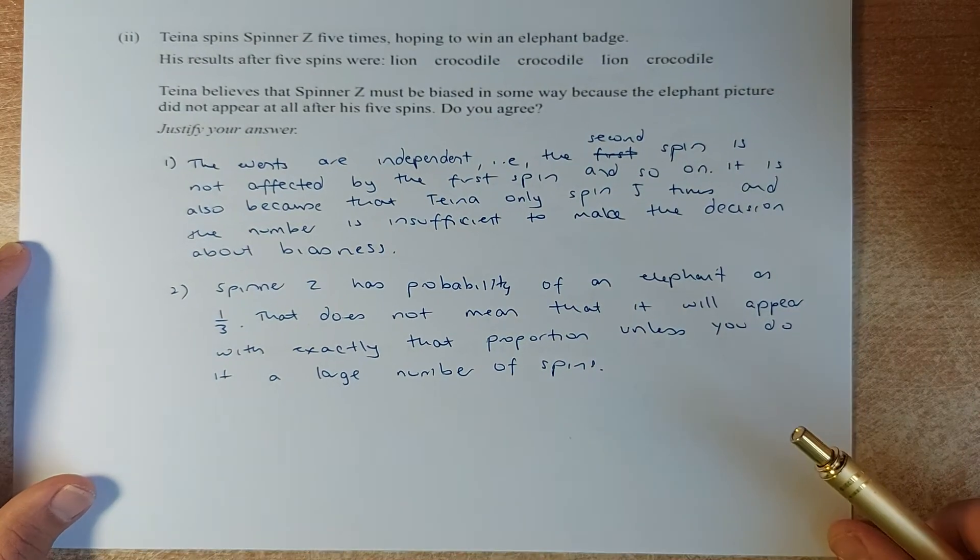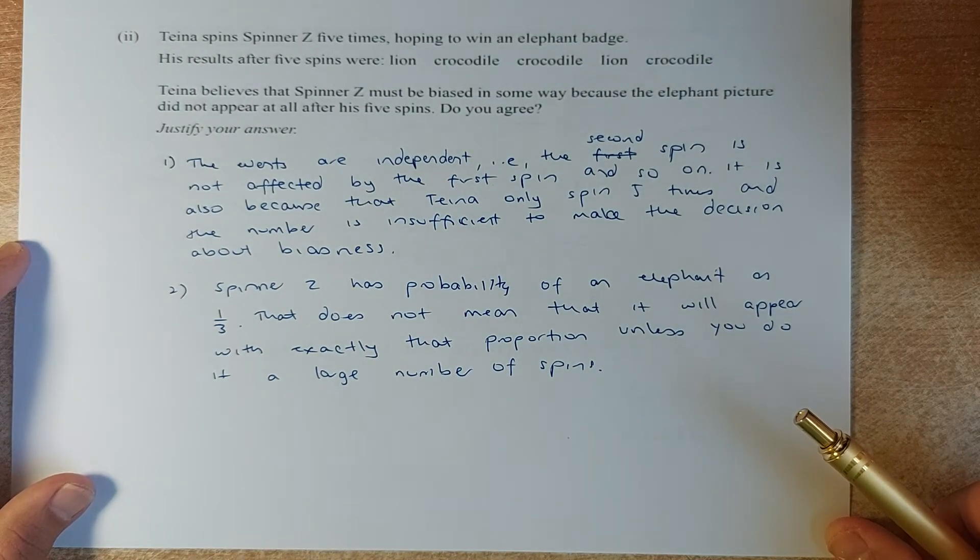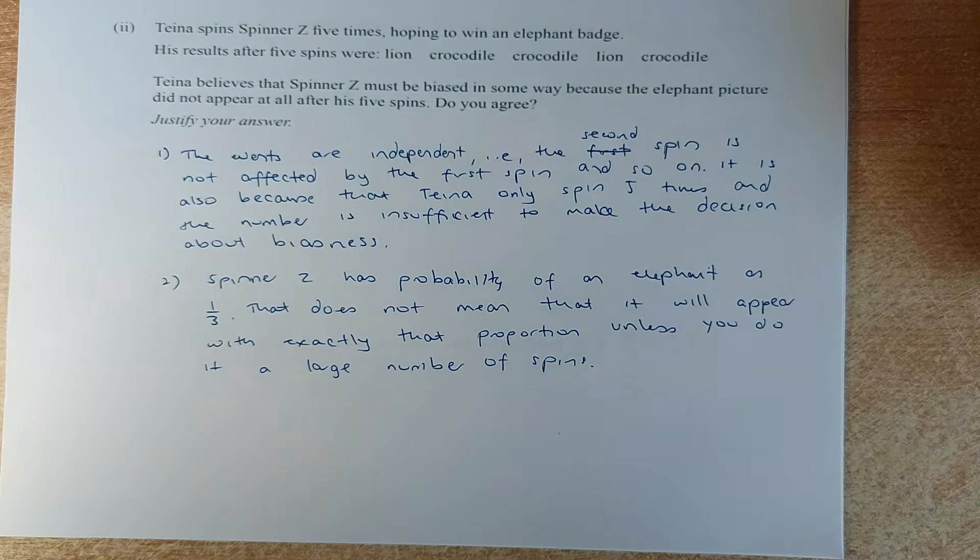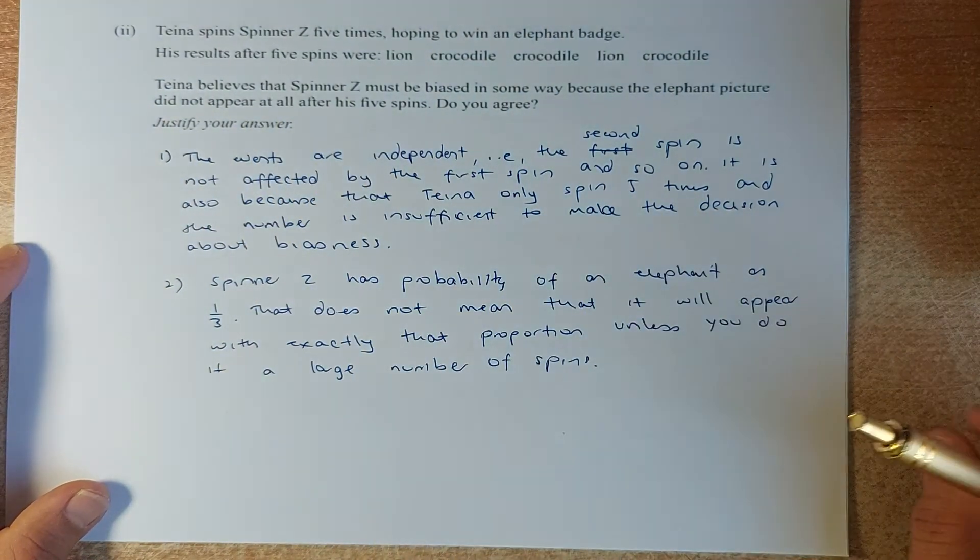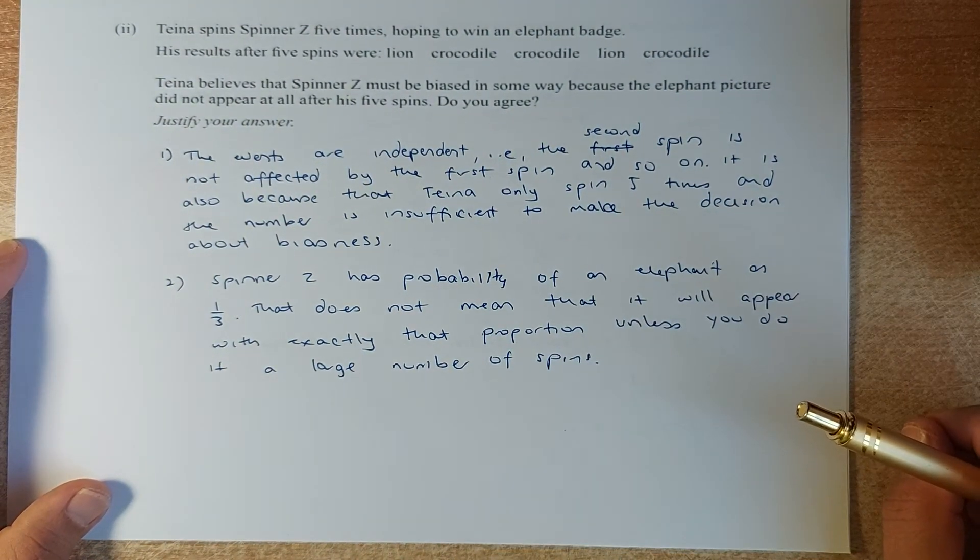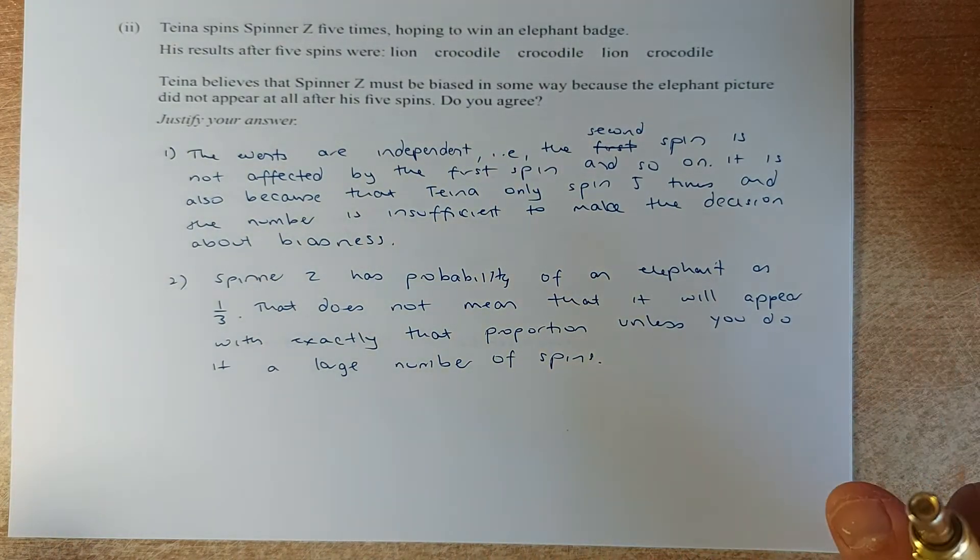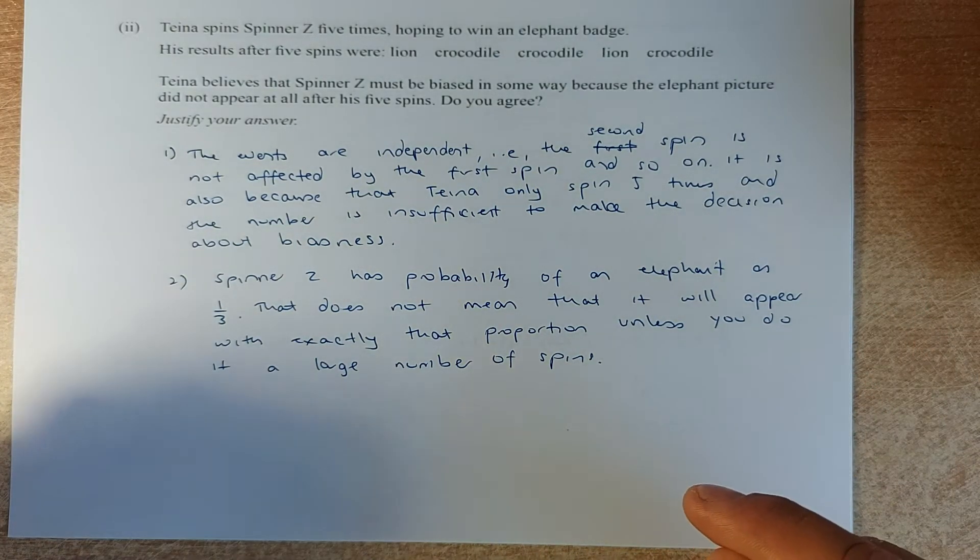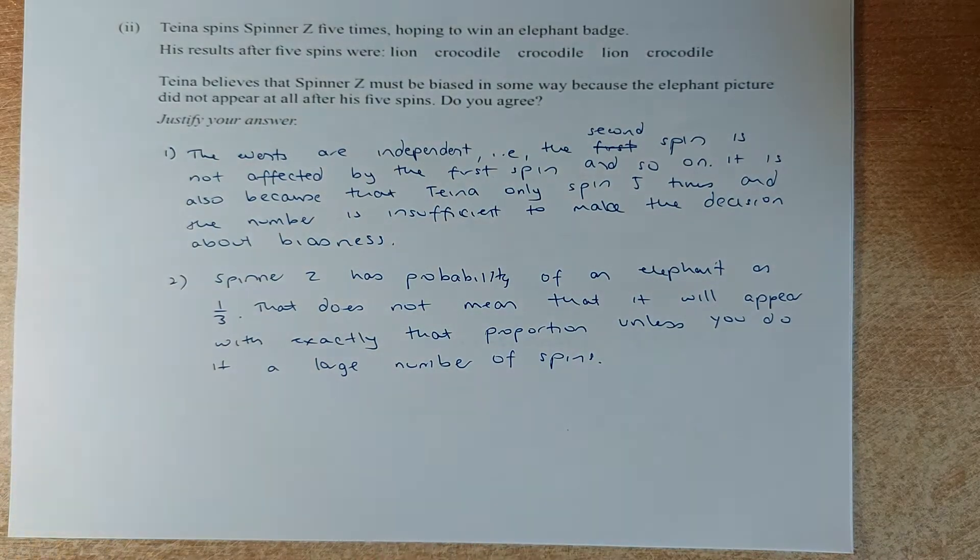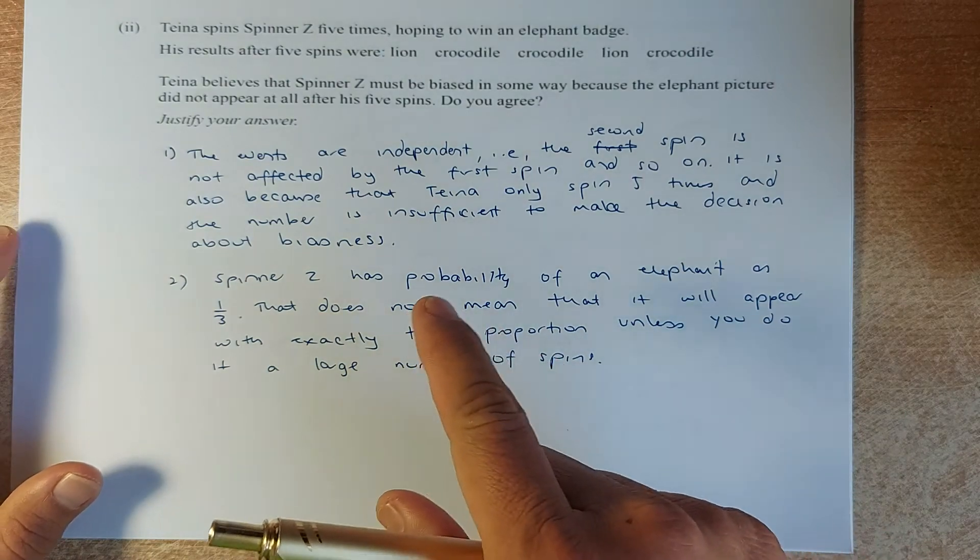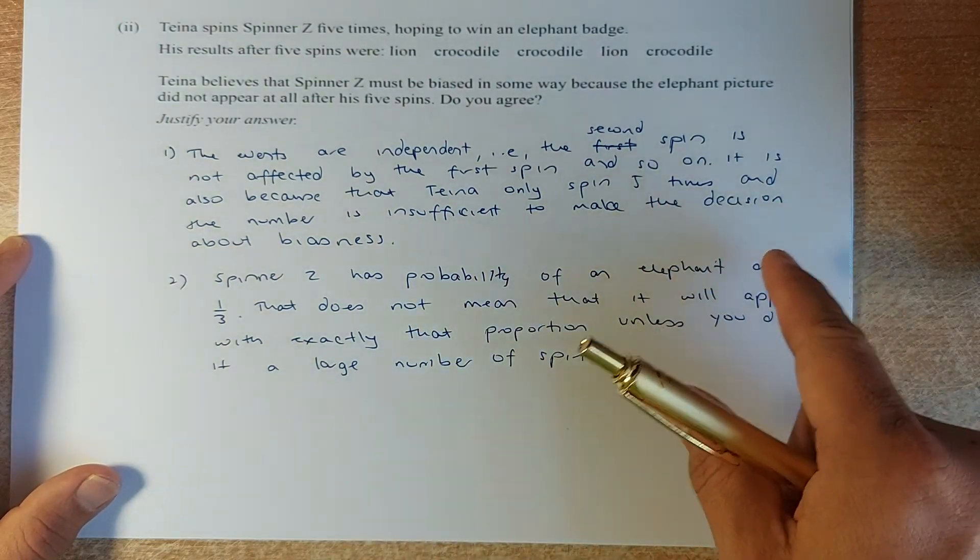Taina spins spinner Z five times hoping to win an elephant badge. Her results were lion, crocodile, crocodile, lion, crocodile. There's no elephant. So he believes that spinner Z must be biased because elephant picture did not appear at all after his five attempts. Do you agree? The events of the spin are not independent. So for example, the second spin is not dependent on the first spin and so forth. The third spin is not dependent on the first and second spin.